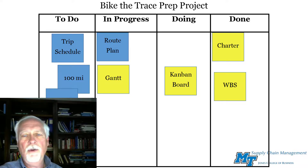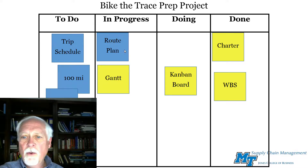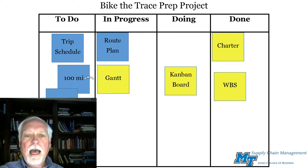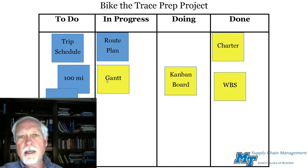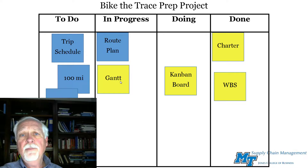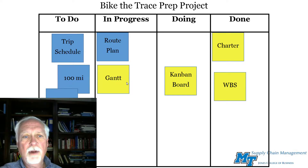Your work breakdown structure may give you a clue on how to use colors. According to this example, I've finished my charter and my work breakdown structure. I'm currently working on the Kanban board, and I have some others I've started but am not currently working on — I started the route plan and the Gantt, but haven't finished them, so I moved them into in-progress.